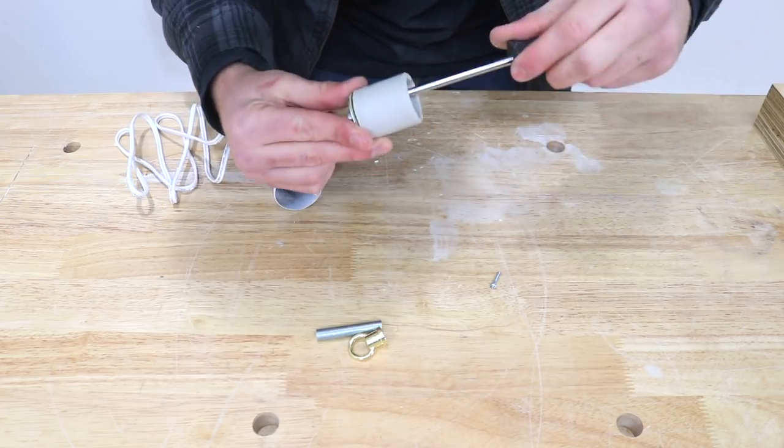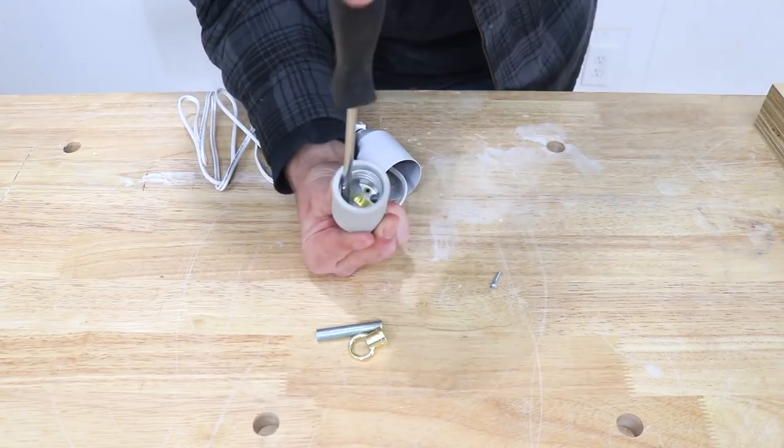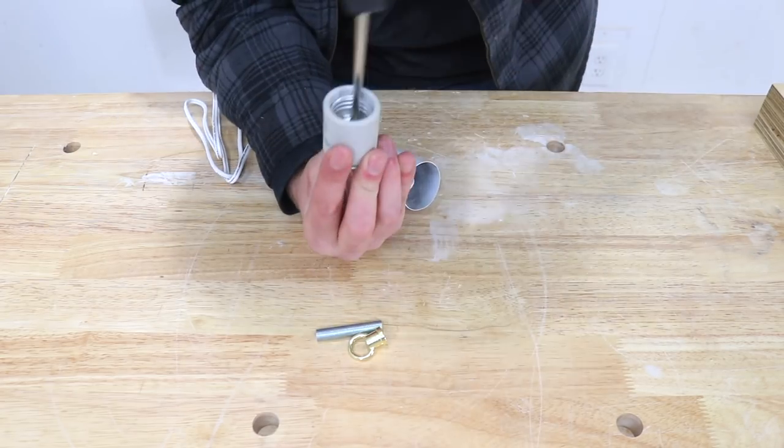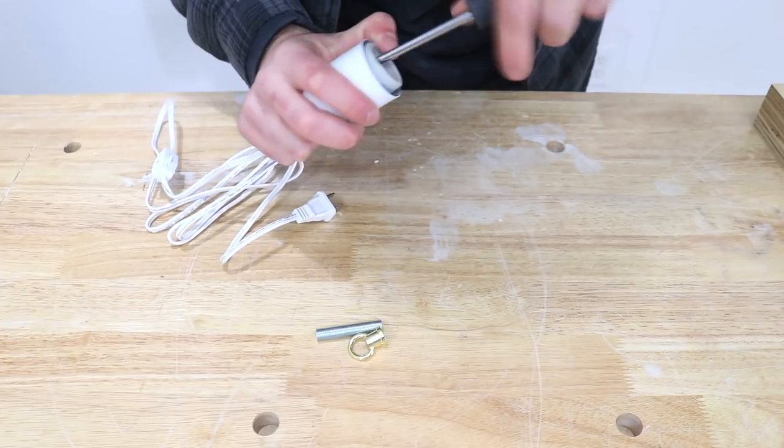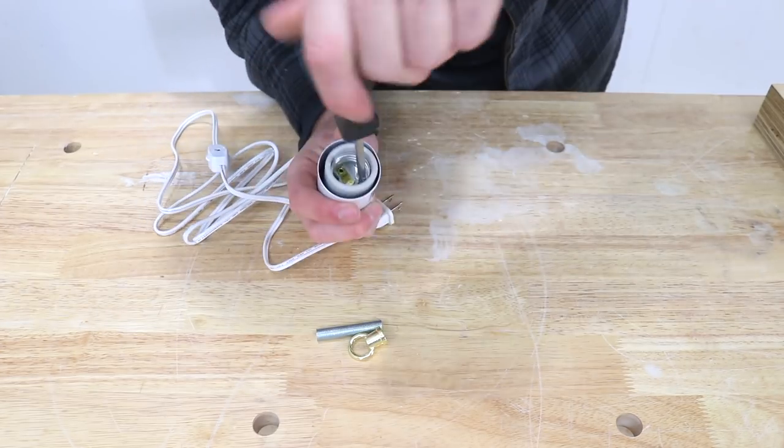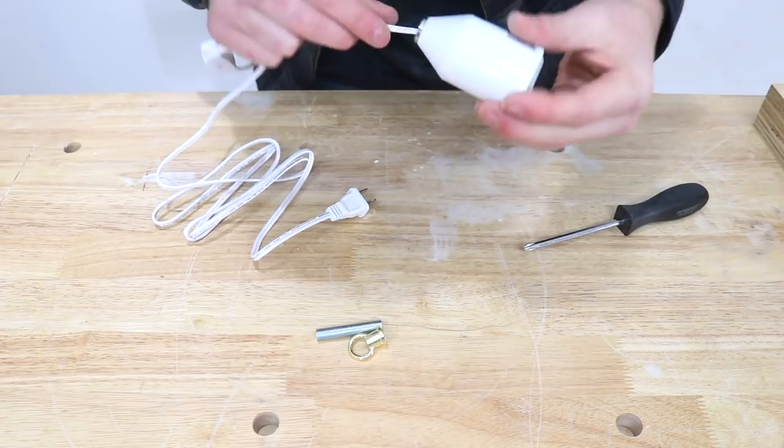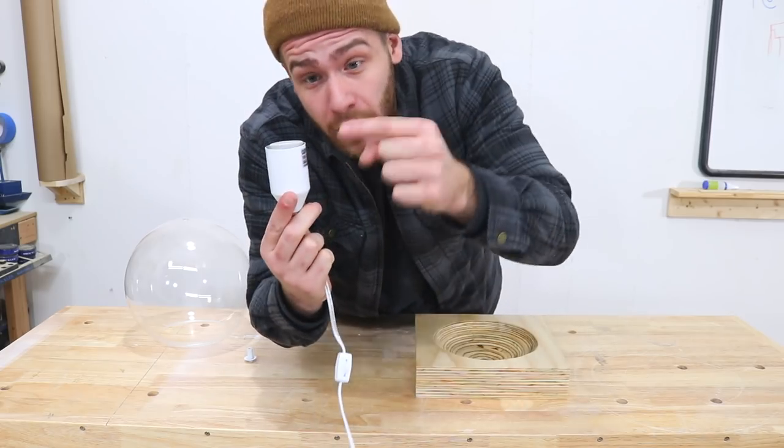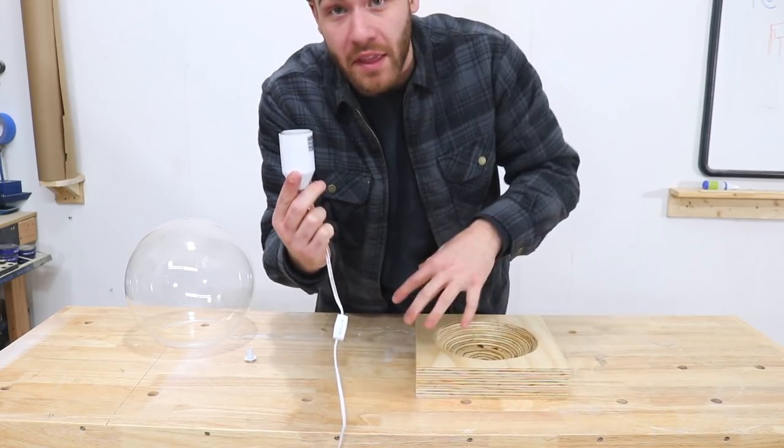Then you insert the screws on the inside of the socket to hold on the back panel and the plastic washer. Then those same screws attached to the socket cover with that little mounting bracket on the inside. And now that we know how this goes together it's time to assemble this thing for real.